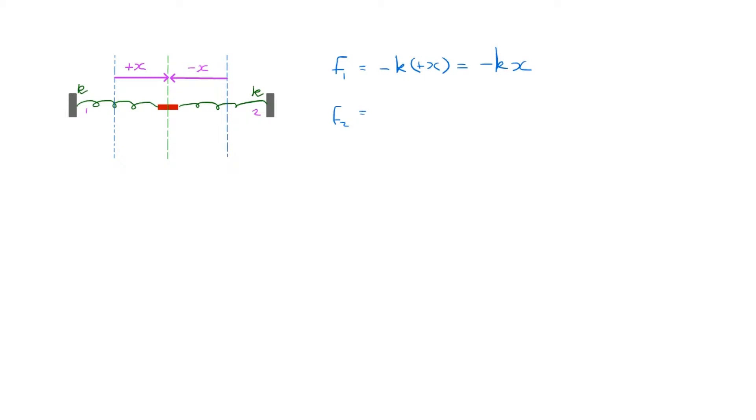The force on the body due to the right-hand spring, F2, is minus k times x, but of course this time our displacement is minus x, and so that gives us plus kx.